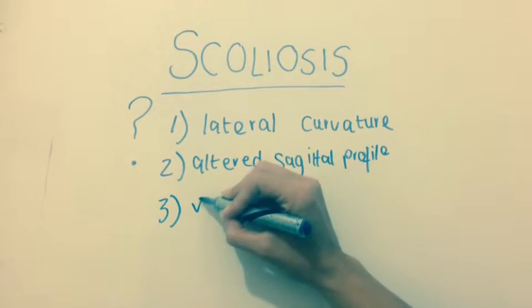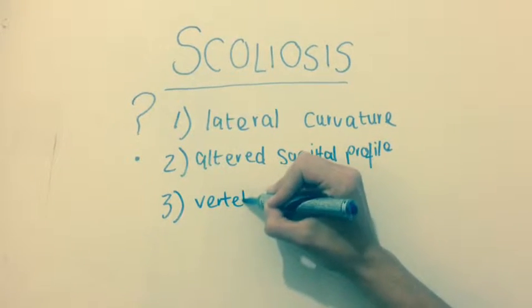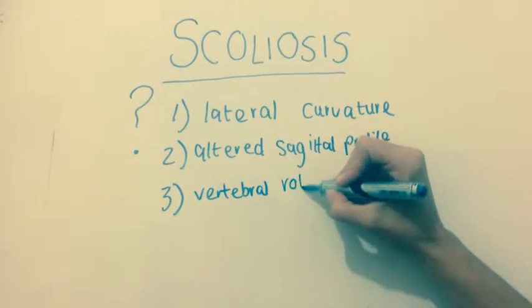The rotation results in thoracic prominences due to secondary rib changes.